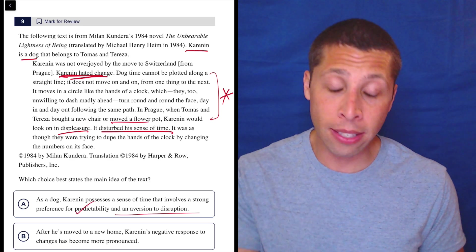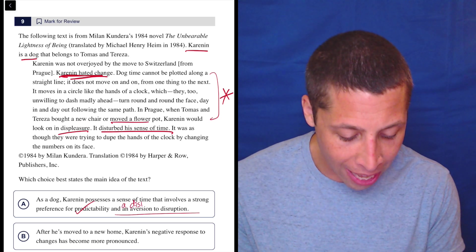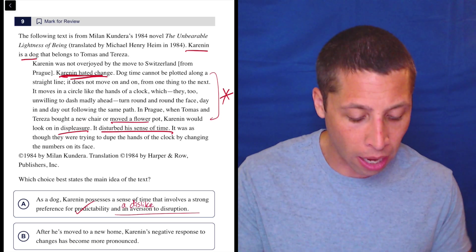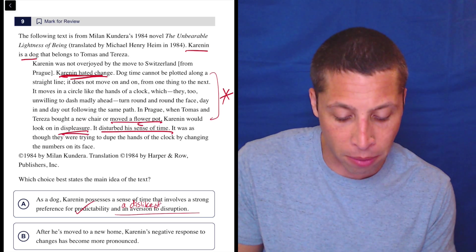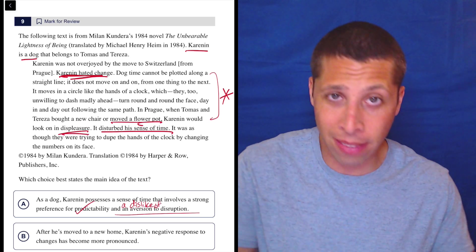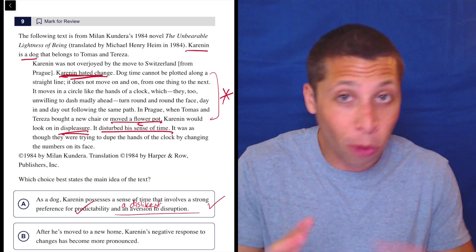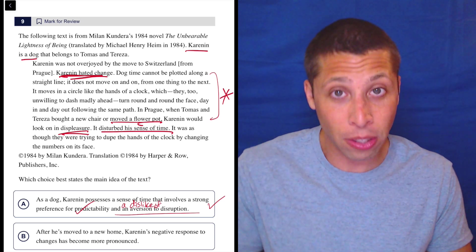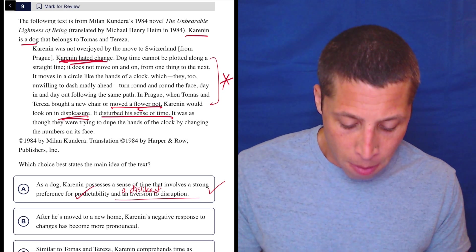Now, aversion is definitely a word you should know. That means kind of like a dislike to disruption. So yeah, if he's upset with a removed flower pot, then that seems right. So this seems good just based on the parts I already understood reading the passage. Let's obviously try all the other choices and make sure. But so far, so good.